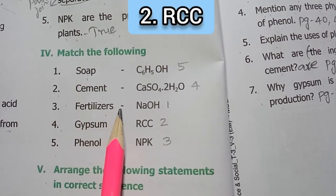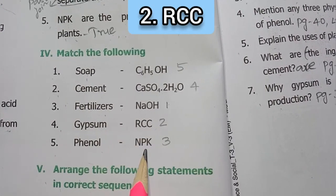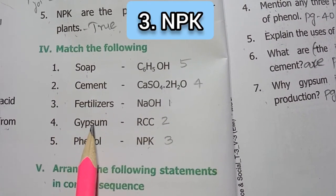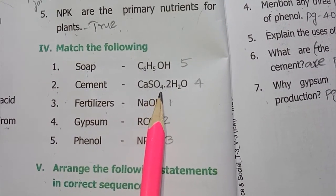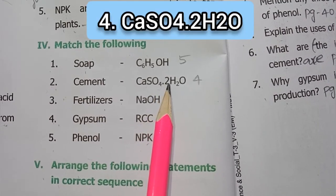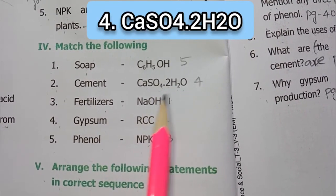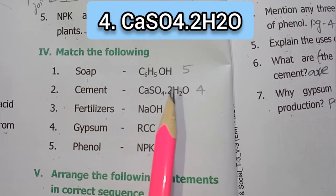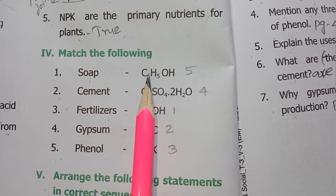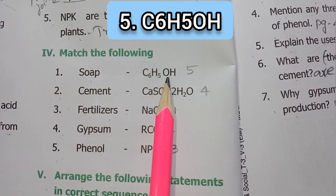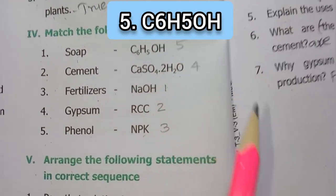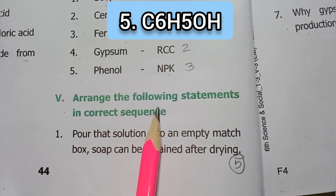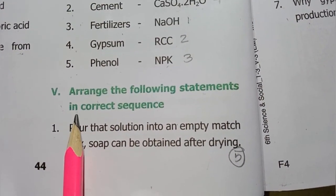Room letter 4: match the following. First one: soap — NaOH. Second one: cement — RCC. Third one: fertilizers — NPK. Fourth one: gypsum — CaSO₄·2H₂O. Fifth one: phenol — C₆H₅OH.